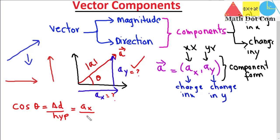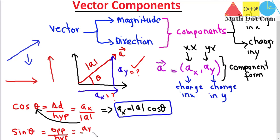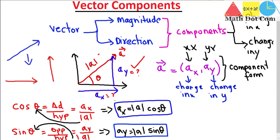So if we rearrange to get Ax, we get: Ax = |A| × cos θ. This is the formula for finding the x component of any vector. Similarly, to find the y component we use sin theta — opposite side divided by hypotenuse — where the opposite side is Ay and the hypotenuse is the magnitude of the vector. So: Ay = |A| × sin θ. This is the formula for finding the y component. Multiply the magnitude by cos θ and sin θ to get the x and y components respectively.